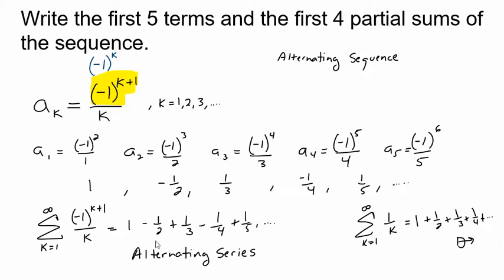But here we have the same series except with this negative 1 to the k plus 1 factor involved which creates an alternating series. So there's going to be a special test called the alternating series test that we could use on any alternating series. So this is just one example of an alternating series.